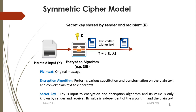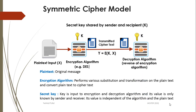The ciphertext is transmitted to the receiver, and on the receiver side, the receiver will apply the decryption algorithm and generate the plaintext. The decryption algorithm is the reverse of the encryption algorithm, which takes input as a ciphertext and the key and generates the plaintext message, which is our original message. This is the conventional symmetric cipher model.